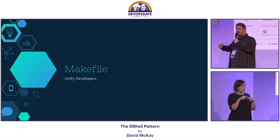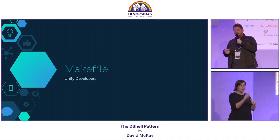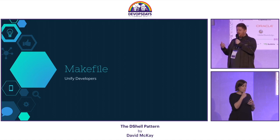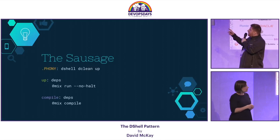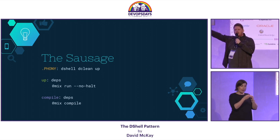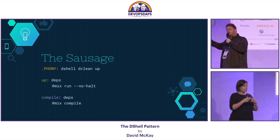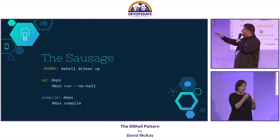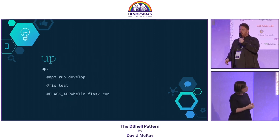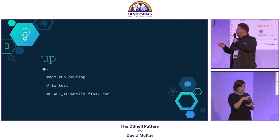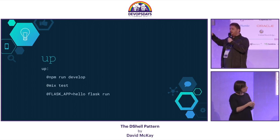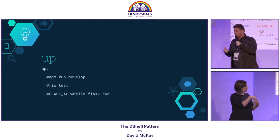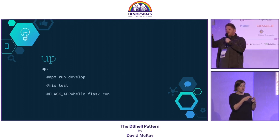Hopefully everyone is familiar with the Makefile — this is not revolutionary, it's a very old tool, but it's very simple. This is how the sausage is made: it's documentation as well as tooling. Anyone can open this Makefile and understand how to build, compile, and run your application. Here we have a 'make up' target that runs our Mix command for Elixir. And I'm a big System of a Down fan, so whenever I type 'make up' I sing it like 'Chop Suey'.